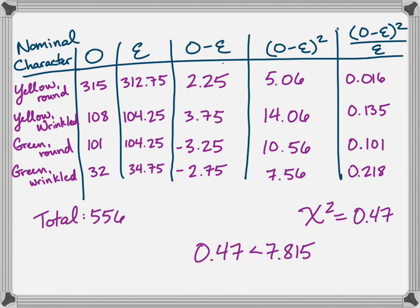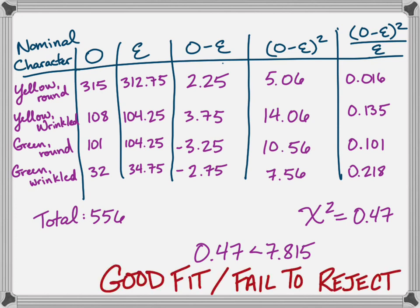And again, with a different degrees of freedom, three degrees of freedom here, you'll see that our critical value changed to 7.815. But just like before, since our test statistic is less than our critical value, it's a good fit, and we fail to reject the null.